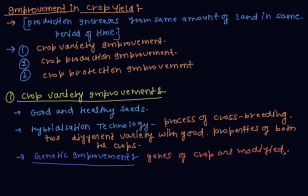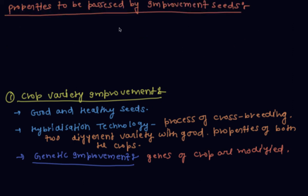Now, the properties to be obtained from improved seeds: the first property is high yield, and the second is improved quality.